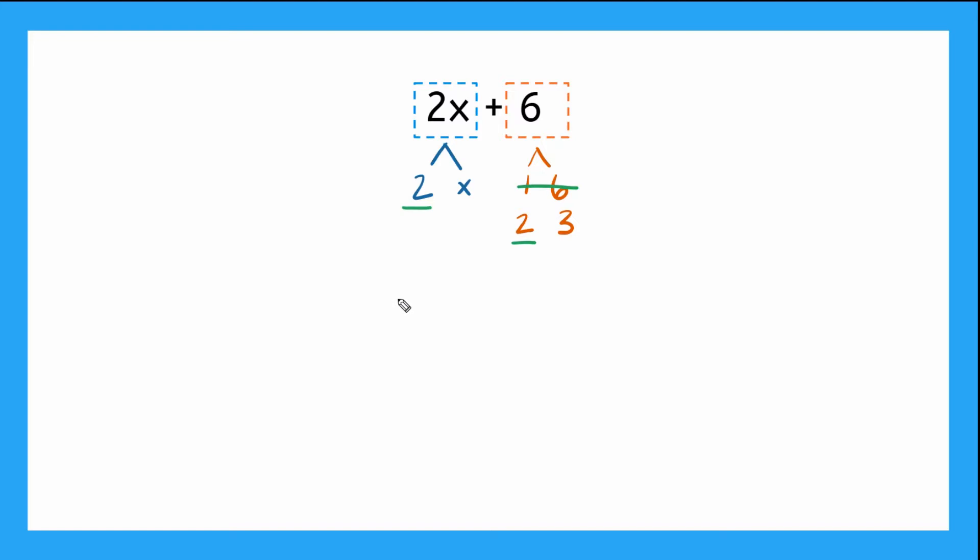That means this is really saying 2 times x plus 2 times 3. So from our expression like this what we're going to do is we're going to factor a 2 out. So we're taking these 2's here out over here and then we're going to have parentheses for what's left over. Now if we took this 2 out what do we have left? Just this x and then I have a plus sign and then I took this 2 out and what do I have left? Just this 3 here.